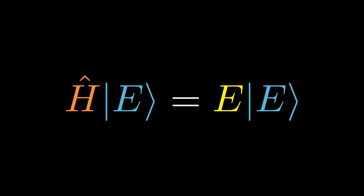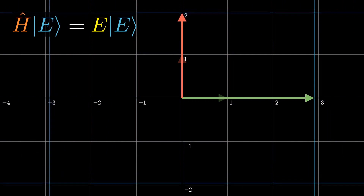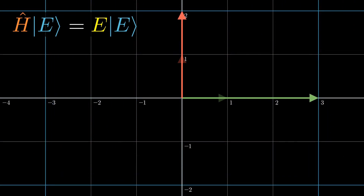Physicists model our universe as a collection of these harmonic oscillators, and the quantum mechanical phenomena of a quantum harmonic oscillator have very far-reaching consequences at macroscopic scale. Without further ado, let's solve the Schrödinger equation. The equation we're trying to solve is the time-independent Schrödinger equation, and this is an eigenvalue problem — it says that a linear operator acting on a vector has the effect of just stretching that vector without rotating it.